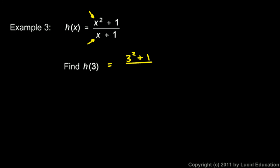So that's a 9 plus 1 is 10 over 4, and you could reduce that to 5 halves or you could write it as a decimal 2.5. So h of 3 is 2.5. So when x is equal to 3, function h has a value of 2.5.